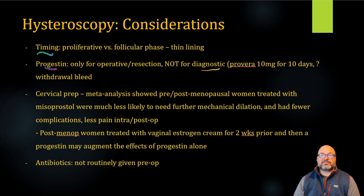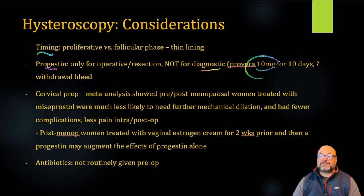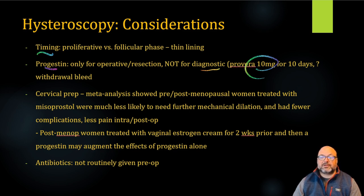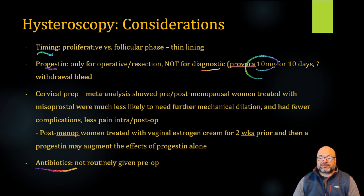As far as pre-treatment with any type of progestin, you would not want to do this for any sort of diagnostic approach, because you want to be able to evaluate the endometrium in its native state. For operative hysteroscopy for resection of tissue, you can do 10 days of a progestin like Provera and then have a withdrawal bleed. As far as cervical preparation, a meta-analysis showed that pre- and postmenopausal women treated with misoprostol were less likely to need further mechanical dilation, and had fewer complications, specifically perforation and less intraop and postoperative pain. Antibiotics are not routinely given because that risk of infection is quite low.